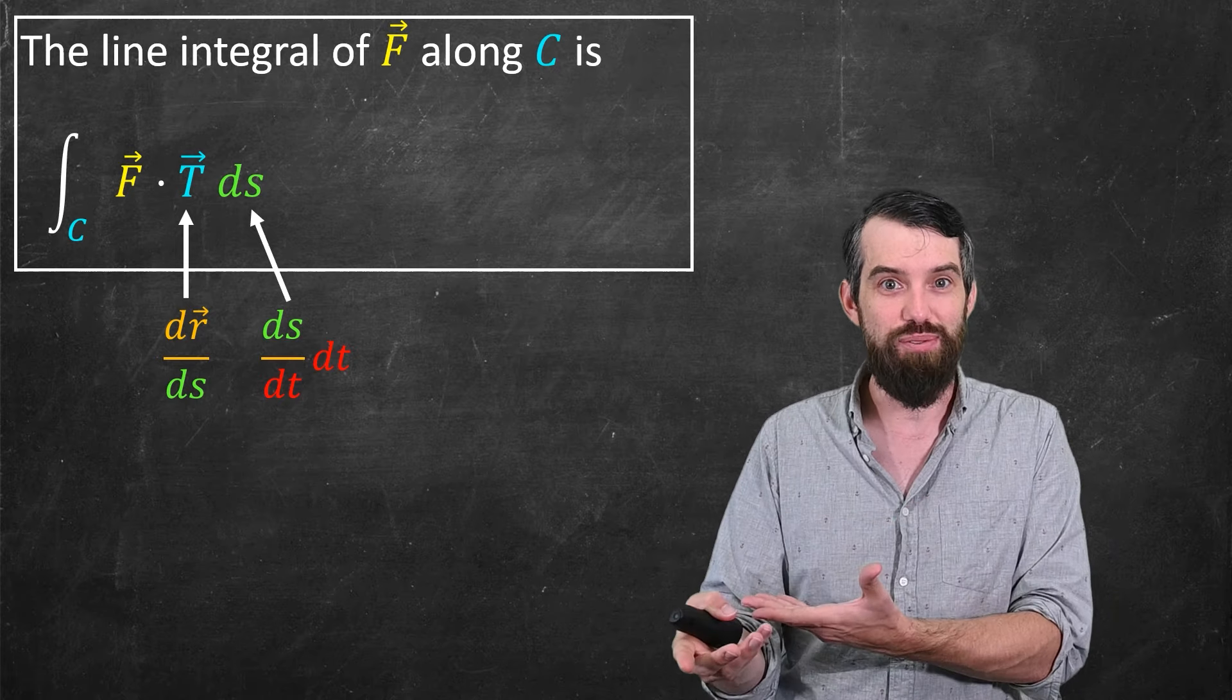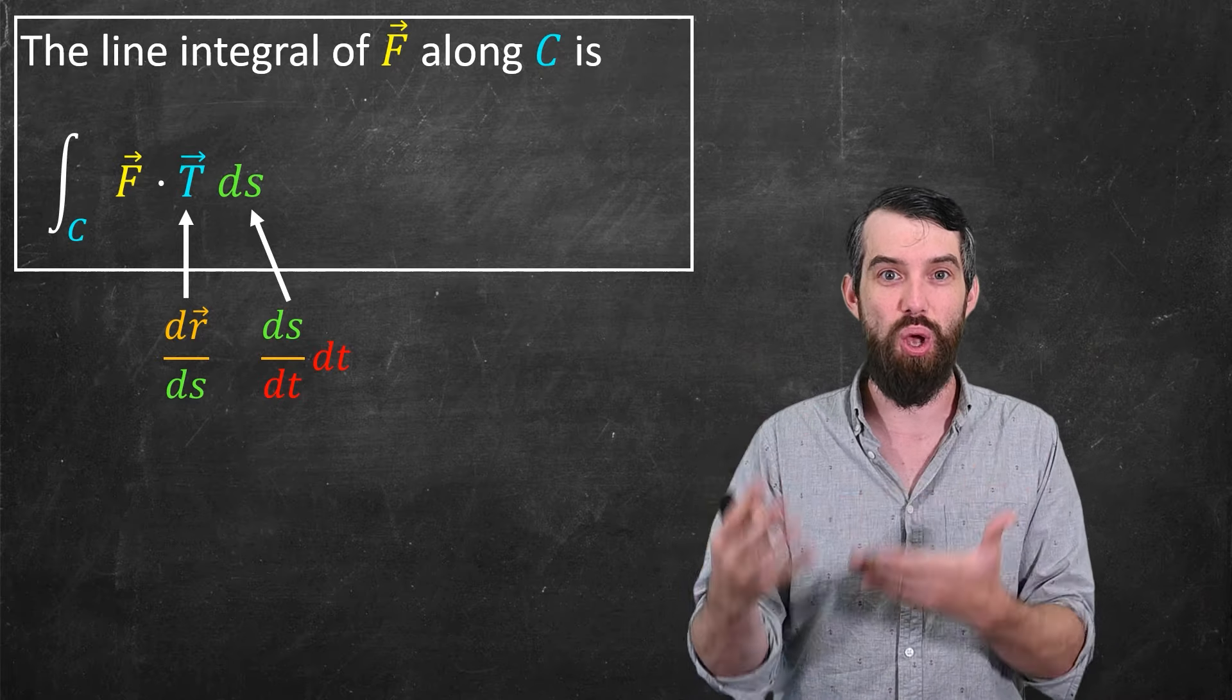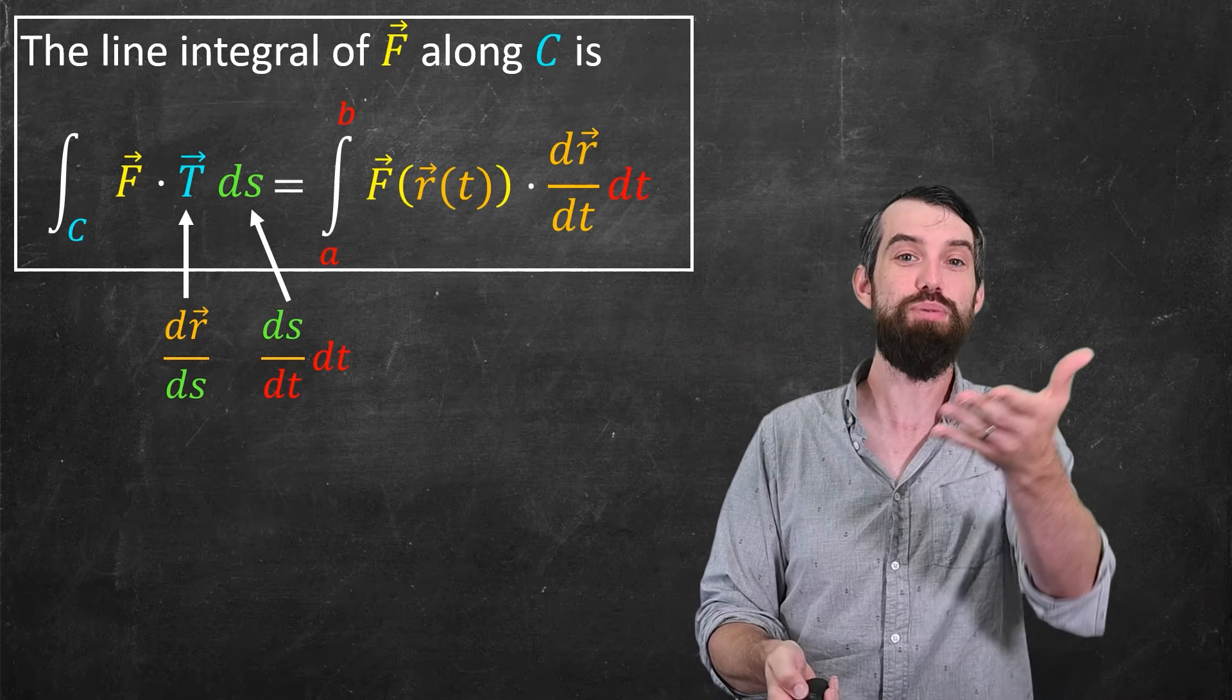And then just by the chain rule ds, I could replace that with ds/dt dt. So again, with chain rule, the ds's cancel. I mean, they don't cancel exactly, but that's the result of the chain rule.